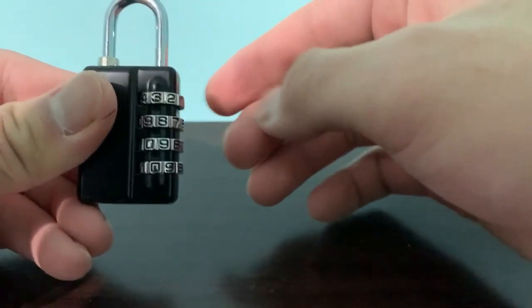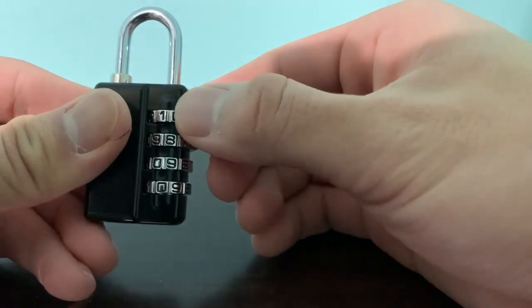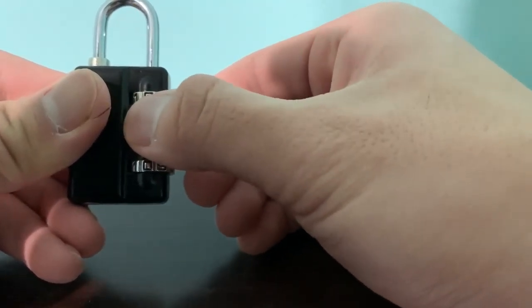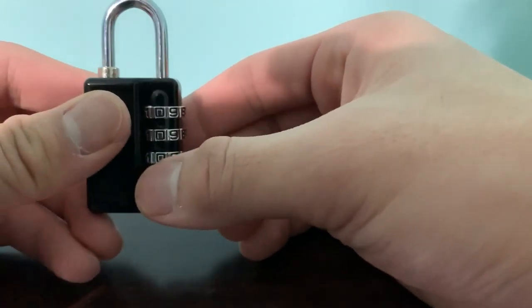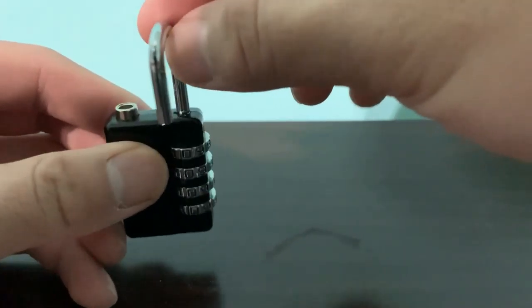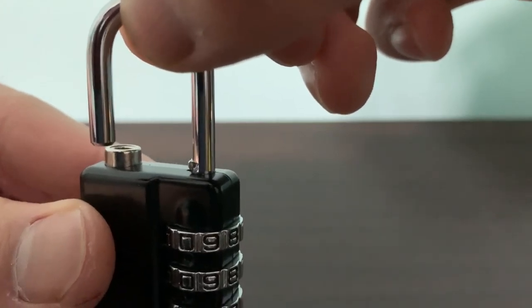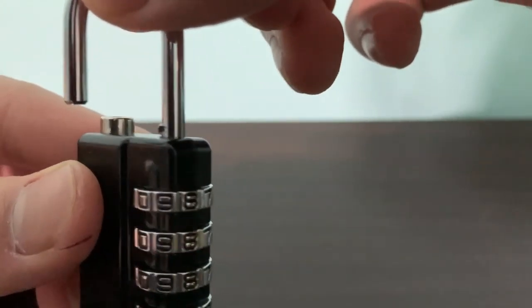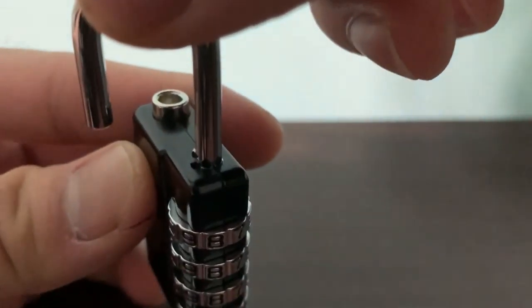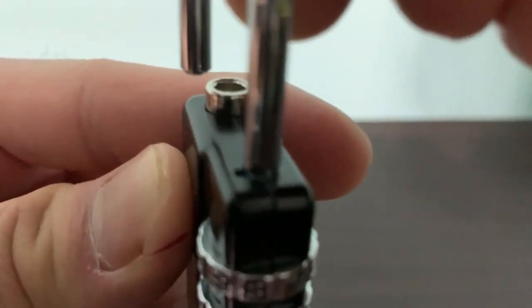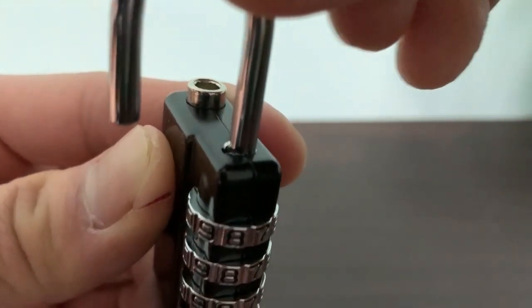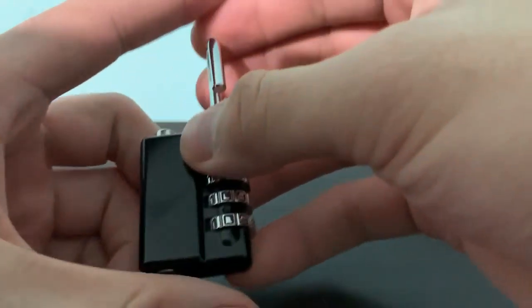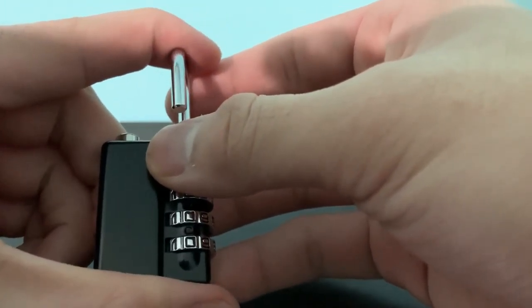If you want to change the combination to something other than 0000, which I'm sure you want to do, what you do, you first unlock it. As you can see, there's a little stub coming out of the lock on the metal part, and if you look closely right there, there's a little notch in the lock where this little stub fits right into, so you want to put it in that position, and then hold it down like that.